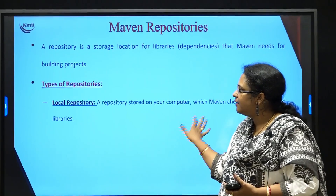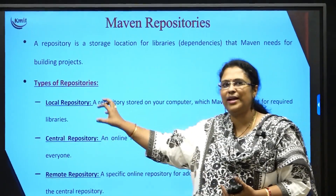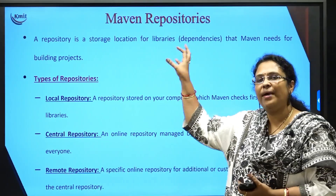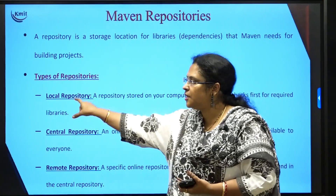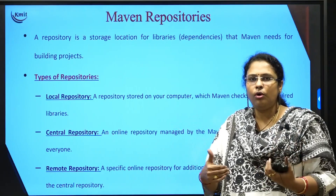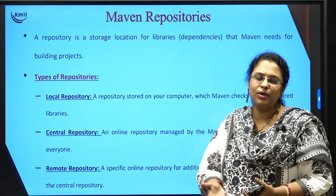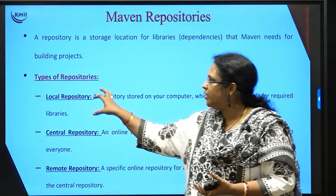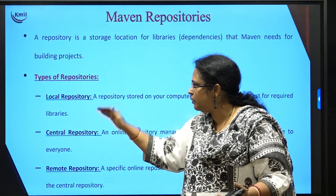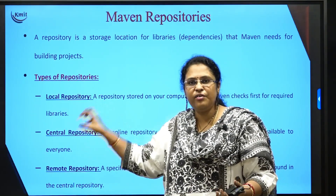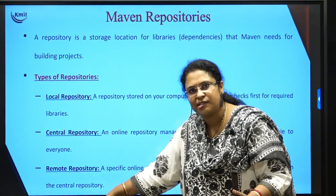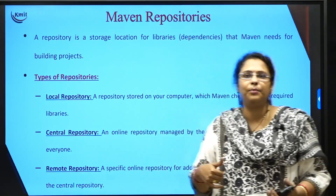You have two main types of Maven repositories. One is the local repository — whenever I ask for a particular library, your Maven build tool will first search in the local repository, which is nothing but your computer. When you download and install Maven, certain libraries will be downloaded along with the package, so it will search in your local repository. If that library is not there, then it will search for the central repository. Even if it does not find it in the central repository, then it will search for other remote repositories from where it can get that particular library.